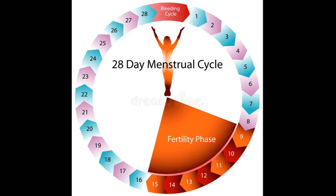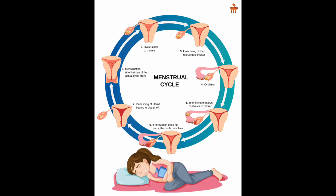Dysmenorrhea — painful periods. It is thought that the uterus is prompted by a certain hormone to squeeze harder than necessary to dislodge its lining. Treatment options include pain-relieving medication and the oral contraceptive pill.